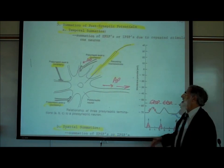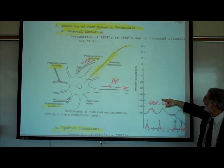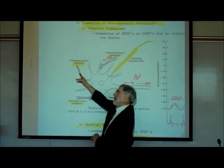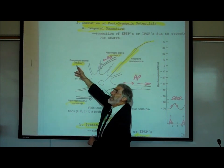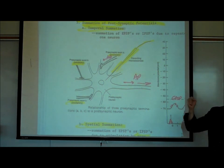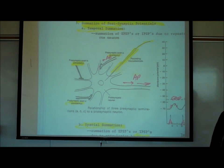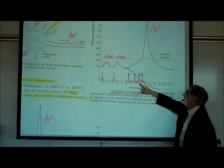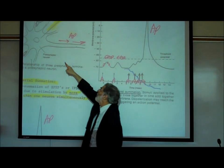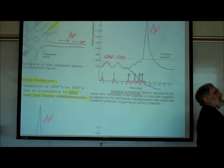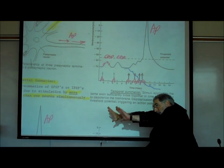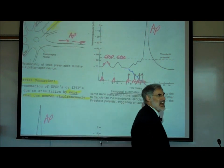Temporal summation of an excitatory neurotransmitter leads to an action potential. What if neuron B released its inhibitory neurotransmitter repeatedly? That would not generate an action potential — it would hyperpolarize the cell more and more, making it further and further from threshold — pushing the boulder away from the edge of the cliff, inhibiting that neuron more and more.